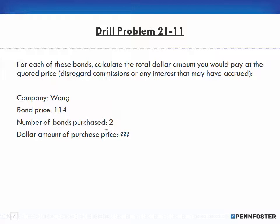Drill problem 21-11: for these bonds, calculate the total dollar amount you would pay at the quoted price. Disregard commissions or any accrued interest. The company's bond price is 114, the number of bonds purchased is two, and we want to find the dollar amount of the purchase price.